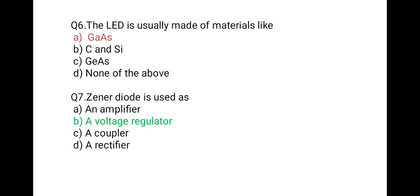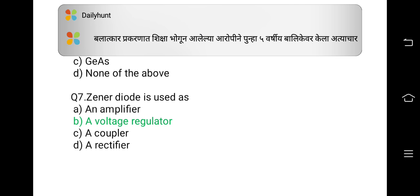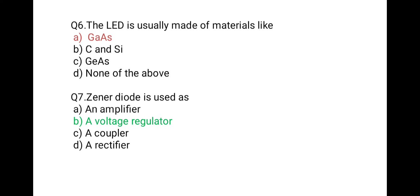The next question: a Zener diode is used as — first an amplifier, second a voltage regulator, third a coupler, last a rectifier. We know that the Zener diode is widely used in reverse bias and its application is a voltage regulator. So the correct option is B.